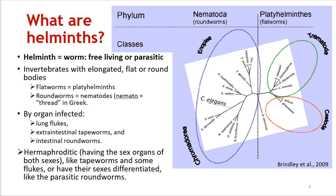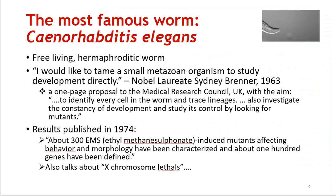Most helminths are hermaphroditic — that is, they have the sex organs of both sexes — and that is also true of the most famous member, C. elegans, as well as tapeworms and some flukes. But some parasites do have their sexes differentiated, and these are mostly characterized by parasitic roundworms, that is, the nematodes.